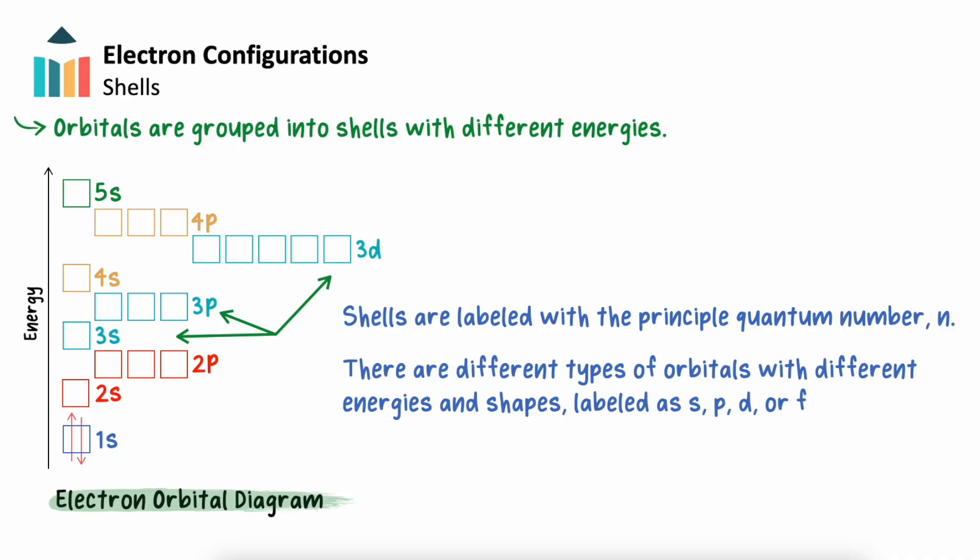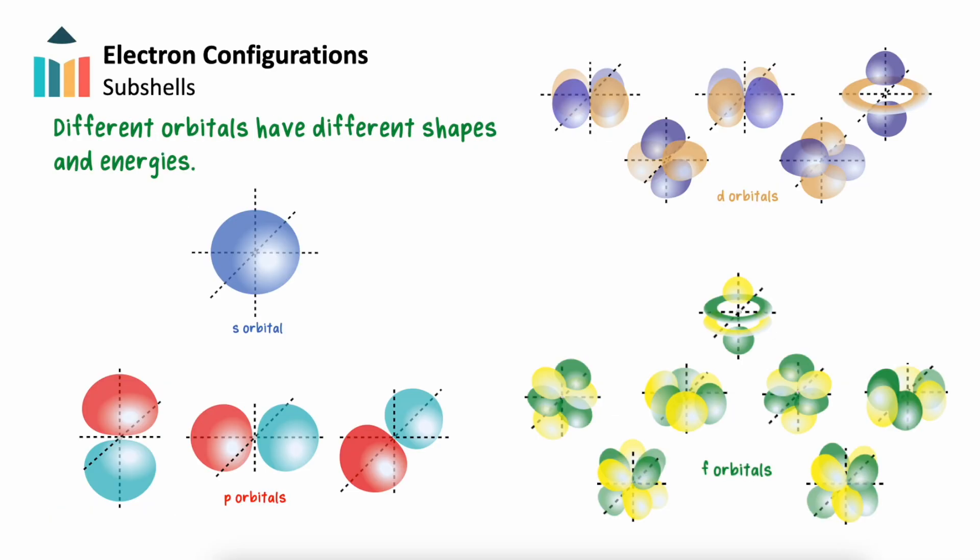We indicate the shell in which the orbital is found by writing the shell number before the orbital letter. For example, the S orbital in shell 1 is labeled as the 1s orbital. The S, P, D, and F orbitals represent the different shapes and possible energies of where electrons can exist around an atom.